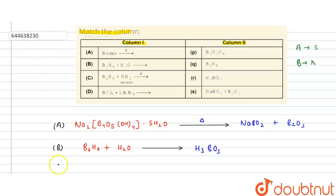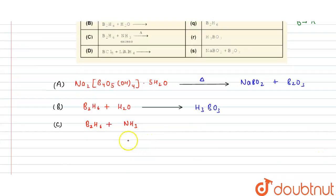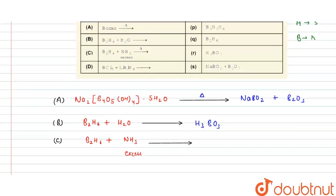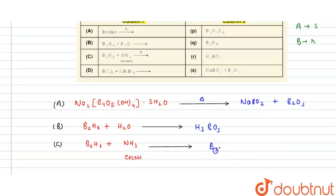Now third part is C. C problem is B2H6 with NH3 in excess. So here we write B2H6 with NH3, and this NH3 is in excess. So what is the product? The product is B3N3H6, the only single option which contains nitrogen. So the final answer, C connects with P.